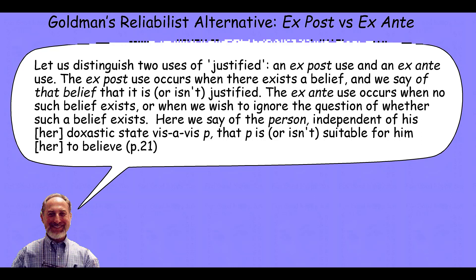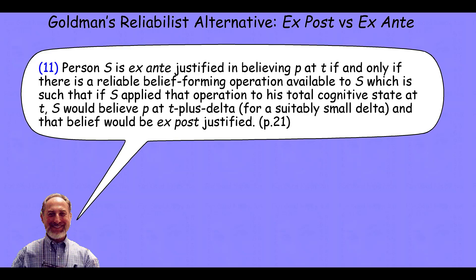So how does Goldman do that? In section 11, he tells us: person S is ex-ante justified in believing P at T if and only if there's a reliable belief-forming operation available to S, which is such that if S applied that operation to his or her total cognitive state at T, S would believe P at T plus delta for a suitably small delta, and that belief would be ex-post justified.